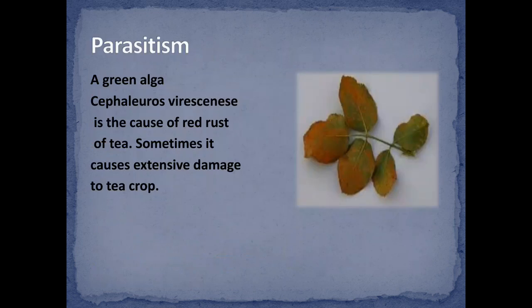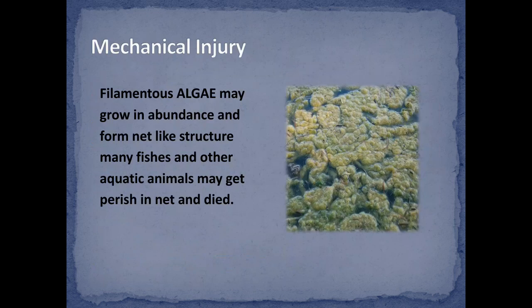Parasitism: a green alga — you can observe here in the diagram — is the cause of red rust of tea. Sometimes it causes extensive damage to the tea crop.